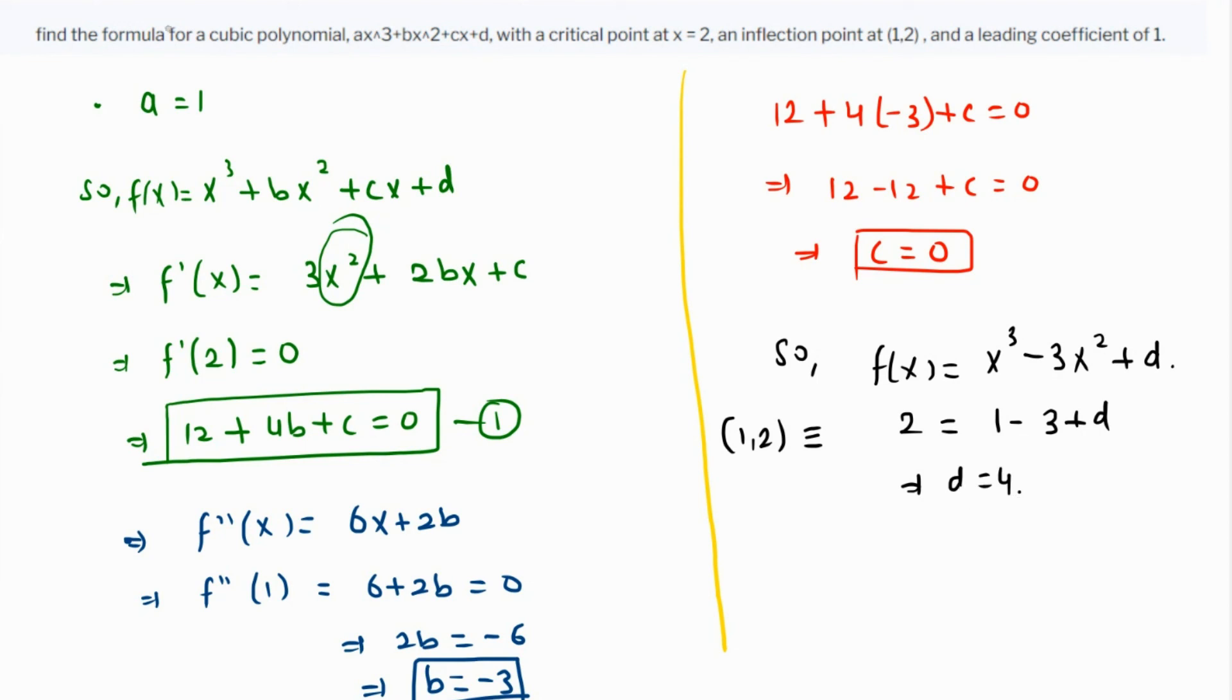Therefore, the final equation is f(x) = x³ - 3x² + 4. Thank you.